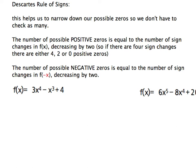Descartes' rule of signs helps us narrow down our possible zeros. The number of possible positive zeros equals the number of sign changes in f(x), the original function, and then it decreases by 2. Because complex roots always come in pairs, if there are 4 sign changes, there are either 4, 2, or 0 positive zeros. If there are 3 sign changes, it would be 3, 1, or 0 positive zeros. The number of negative zeros equals the number of sign changes in f(−x), and that also decreases by 2.